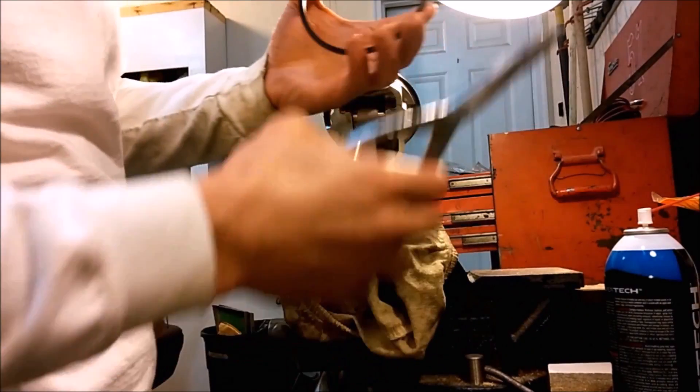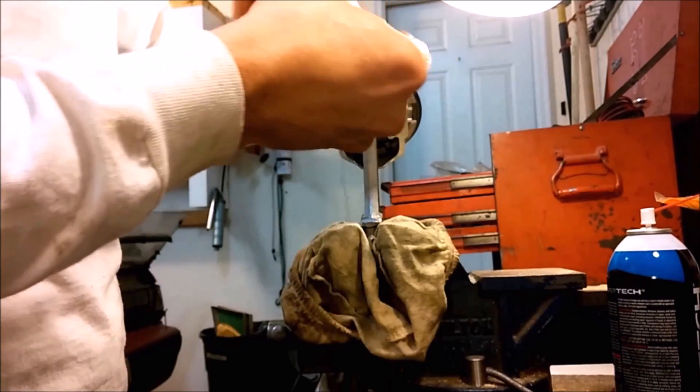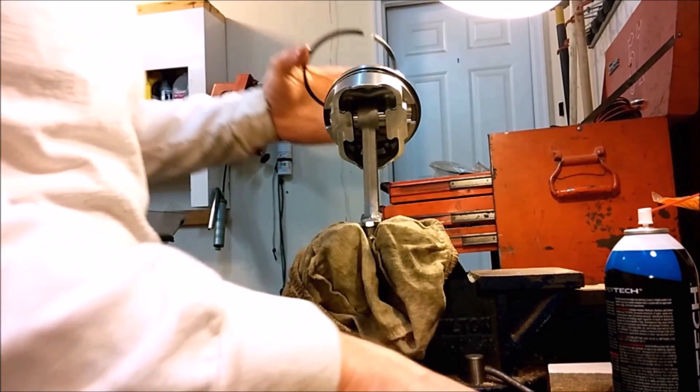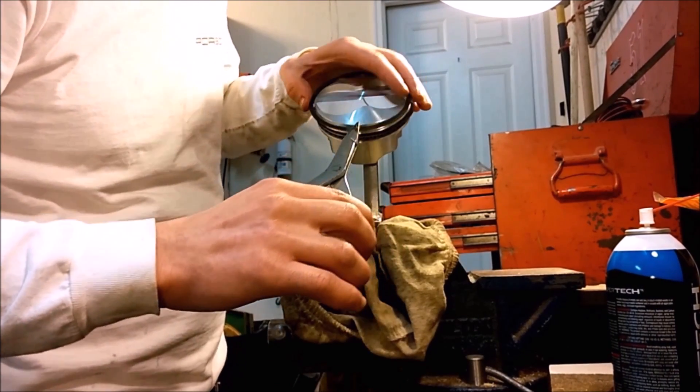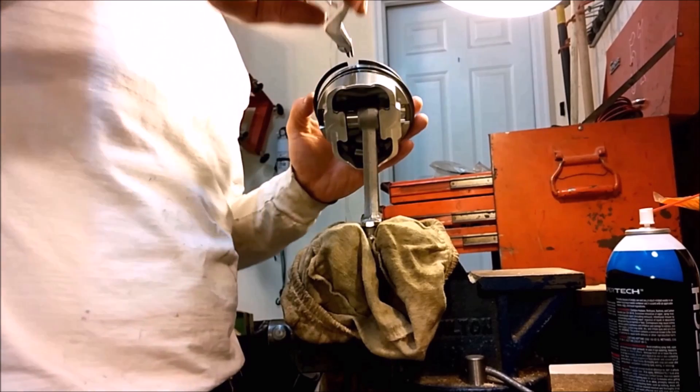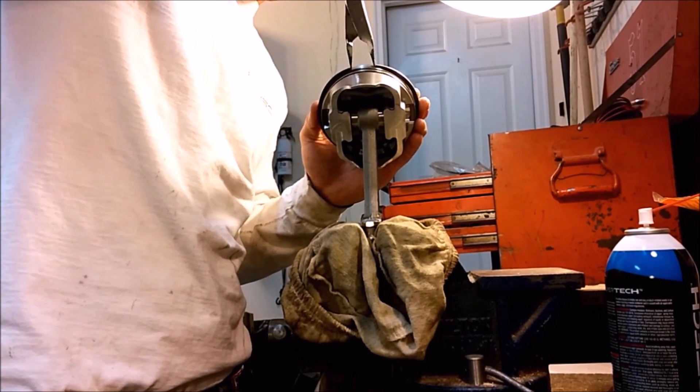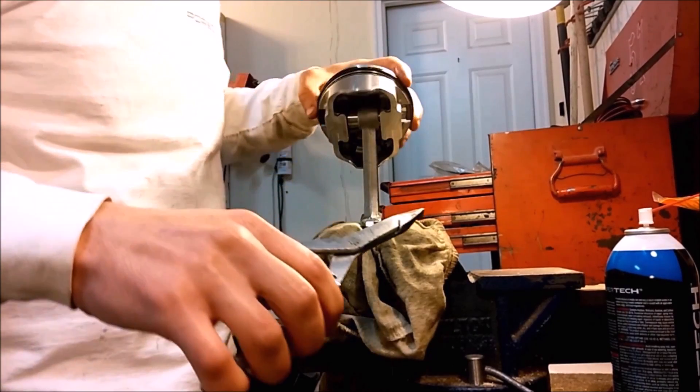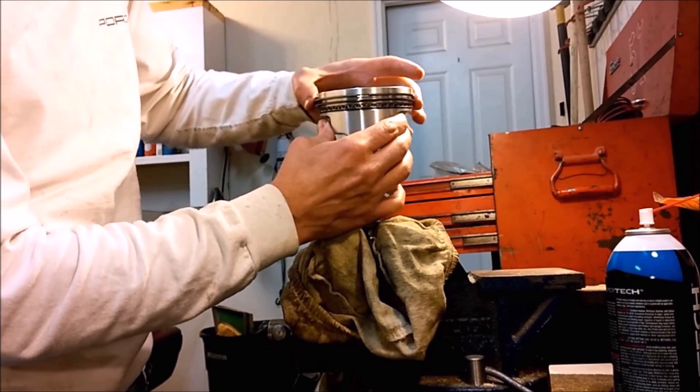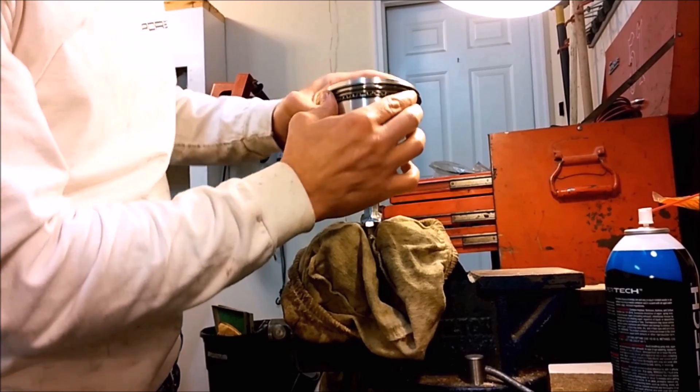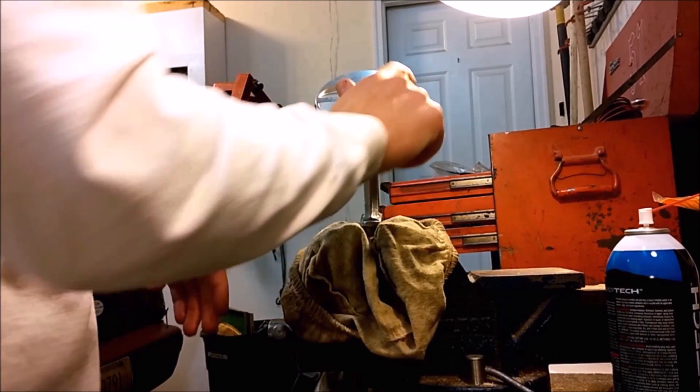And finally the top ring, which will be 180 degrees from the second ring. Okay, everything's moving freely, so no binding. Everything's installed correctly and oriented correctly for the arrow.